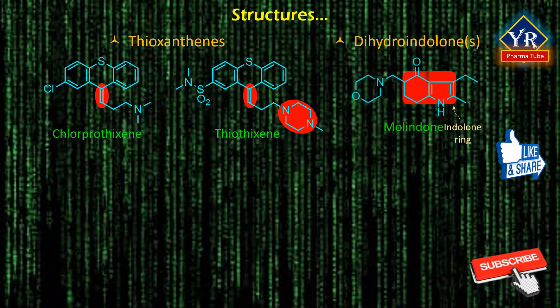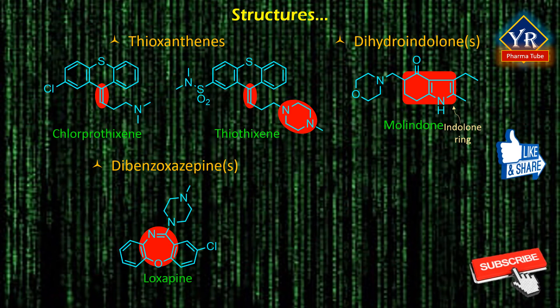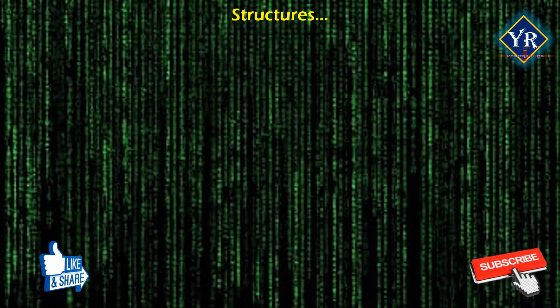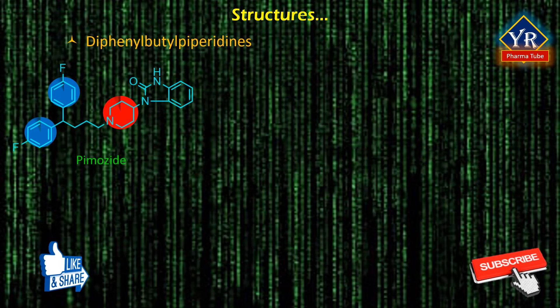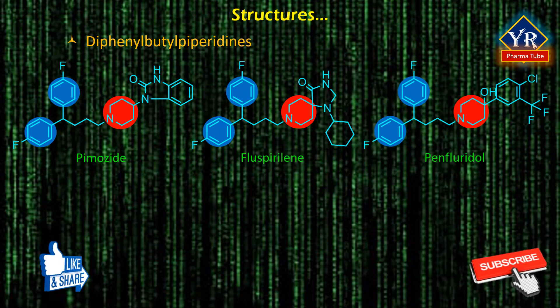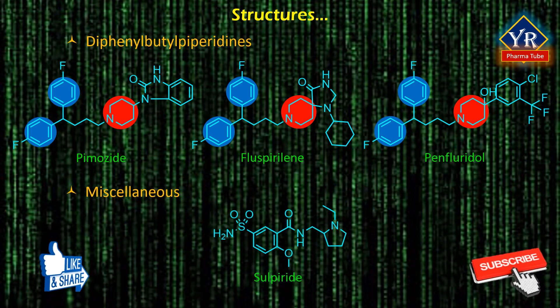Molindone is a dihydroindolone derivative which possesses an indolone heterocyclic ring system. Loxapine is an example of a dibenzoxazepine derivative, and clozapine is a dibenzodiazepine derivative. Diphenylbutyl piperidines are structures possessing two phenyl rings having fluorine atoms, a butyl connector, and a piperidine heterocyclic ring system. These include pimozide, fluspiriline, and penfluoridol. Sulpiride is a miscellaneous antipsychotic drug. We will discuss each of these different classes of antipsychotics in future classes.